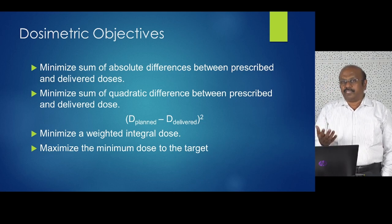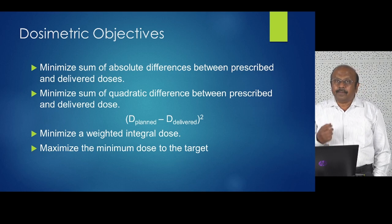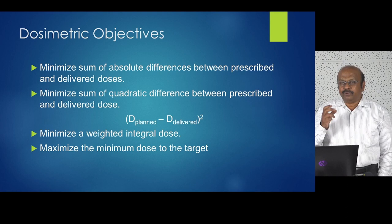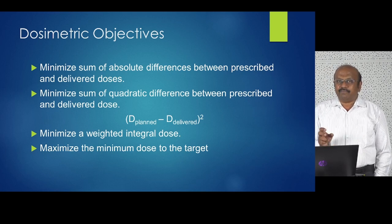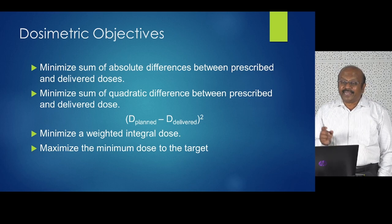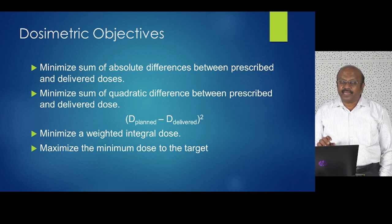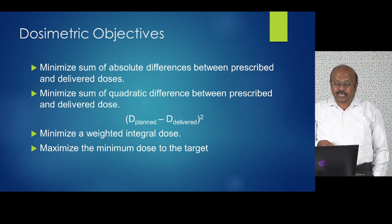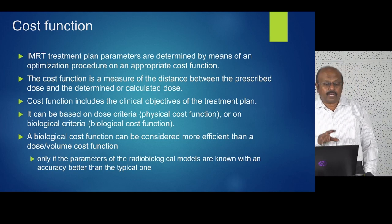What are the objectives of inverse planning? To minimize the sum of absolute differences between the prescribed and delivered dose — the delivered dose should equal the prescribed dose. Also to minimize the sum of quadratic differences between prescribed and delivered dose, minimize the weighted integral dose, and maximize the minimum dose to the target. Here we use a cost function for optimization.